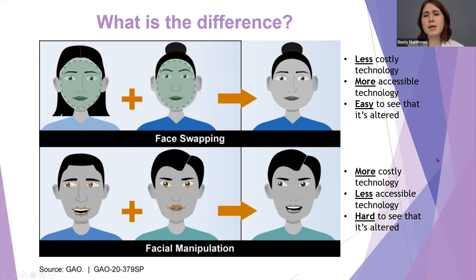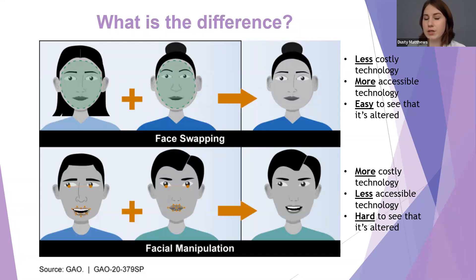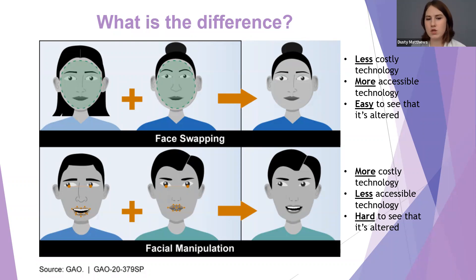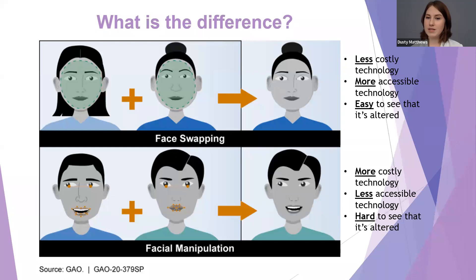What's the difference between cheap fakes and deep fakes? At the top of the slide is face swapping — a cheap fake — which is less costly, more accessible to everyday people, and very easy to see that it's altered. Below is a deep fake illustration showing how it takes eye movement, mouth movement, and facial features and maps them onto someone else's face. This is more costly, less accessible, more advanced, and much harder to see that it's altered.